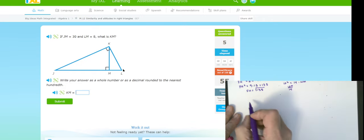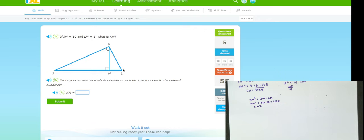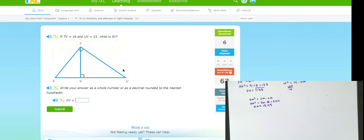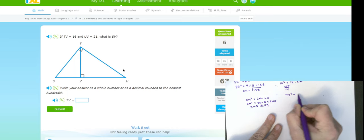So, they want to know what KM. So, I know that KM squared is equal to JM times LM. JM is 30 and 8. So, KM squared is equal to 240. So, KM is approximately square root of 240. So, this is the altitude theorem. So, I know that TV squared is equal to UV times SV.